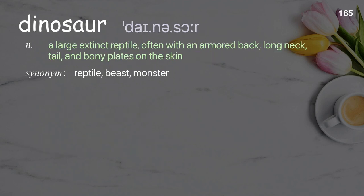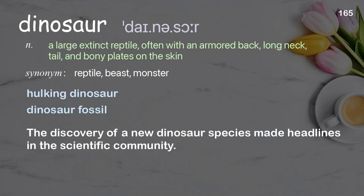Dinosaur: a large extinct reptile, often with an armored back, long neck, tail, and bony plates on the skin. Examples: hulking dinosaur, dinosaur fossil. The discovery of a new dinosaur species made headlines in the scientific community.